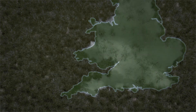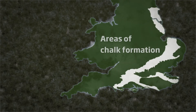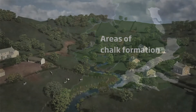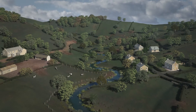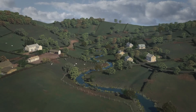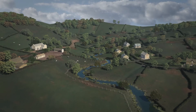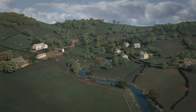Chalky ground, more commonly found in the south and east of England, holds rainwater like a sponge, making it a valuable water resource. However, once the ground can no longer hold any more water, it can lead to groundwater flooding. This happens when the sponge becomes full and the water table rises to the ground surface.